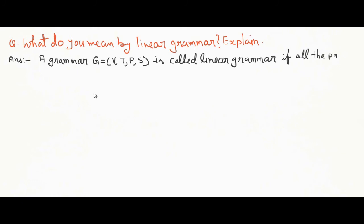Now a linear grammar is a grammar in which at most one variable can occur on the right side of any production without restriction on the position of this variable.